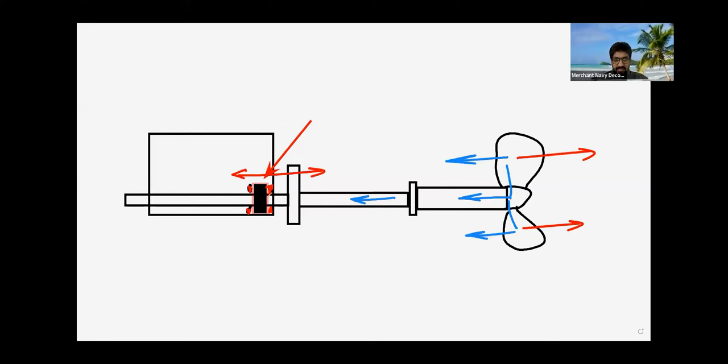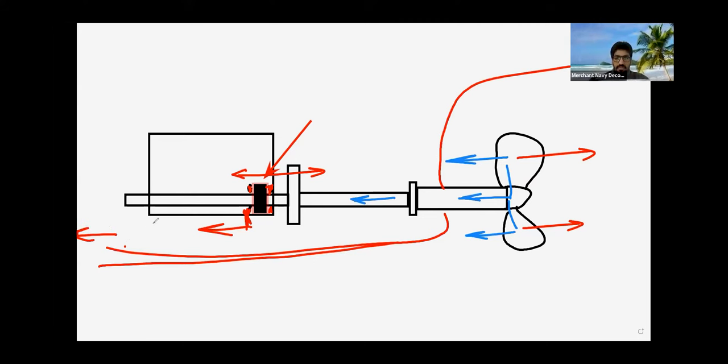And these pads, they will shift that thrust to the bed plate and bed plate is connected to hull. So the hull will get the force and the hull will move the ship forward. So that's the thrust bearing of the two-stroke diesel engine, the main engine.